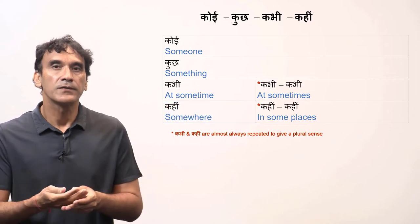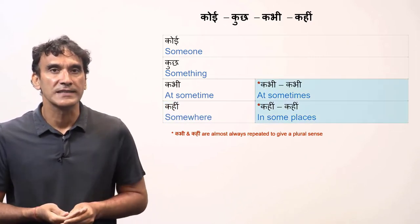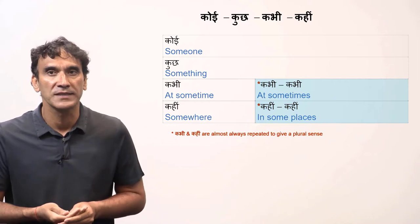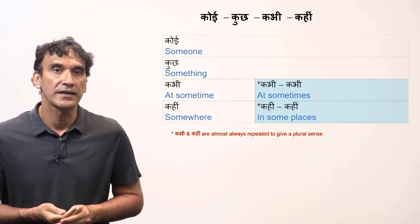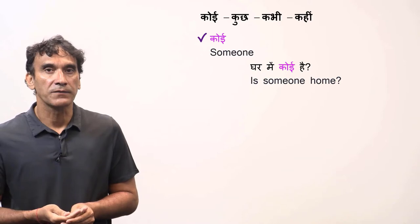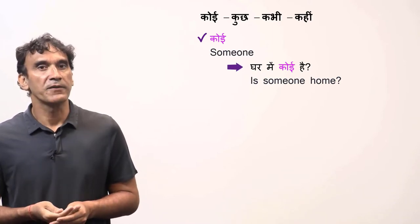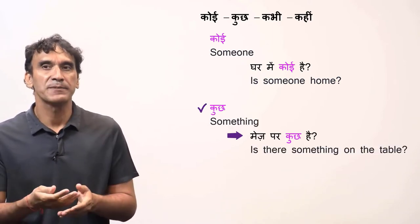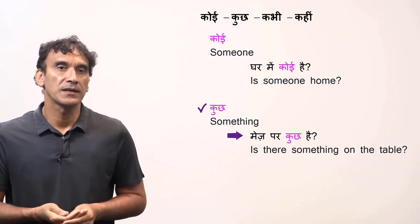The words Kabhi and Kahin are mainly used in the plural sense, meaning the common use of them is Kabhi Kabhi and Kahin Kahin. Here are some examples. Koi means someone — ghar mein koi hai — Is someone home? Kuch means something — mez par kuch hai — Is there something on the table?